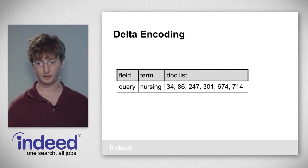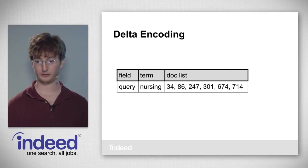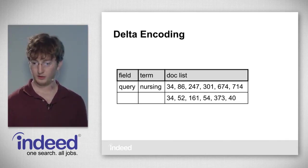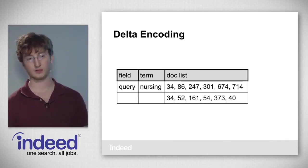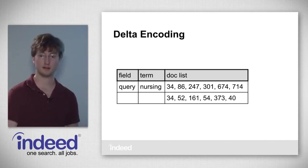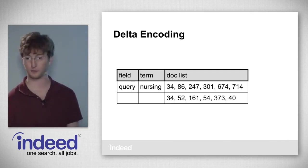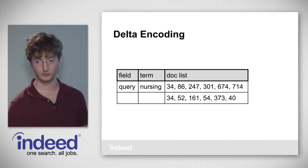For example, the doc list for field 'query', term 'nursing' might be: 34, 86, 247, 301, 674, 714. The delta-encoded version is: 34, 52, 161, 54, 373, 40 — just the differences between adjacent terms. That's all we have to store, and we can restore the original doc list from that information.